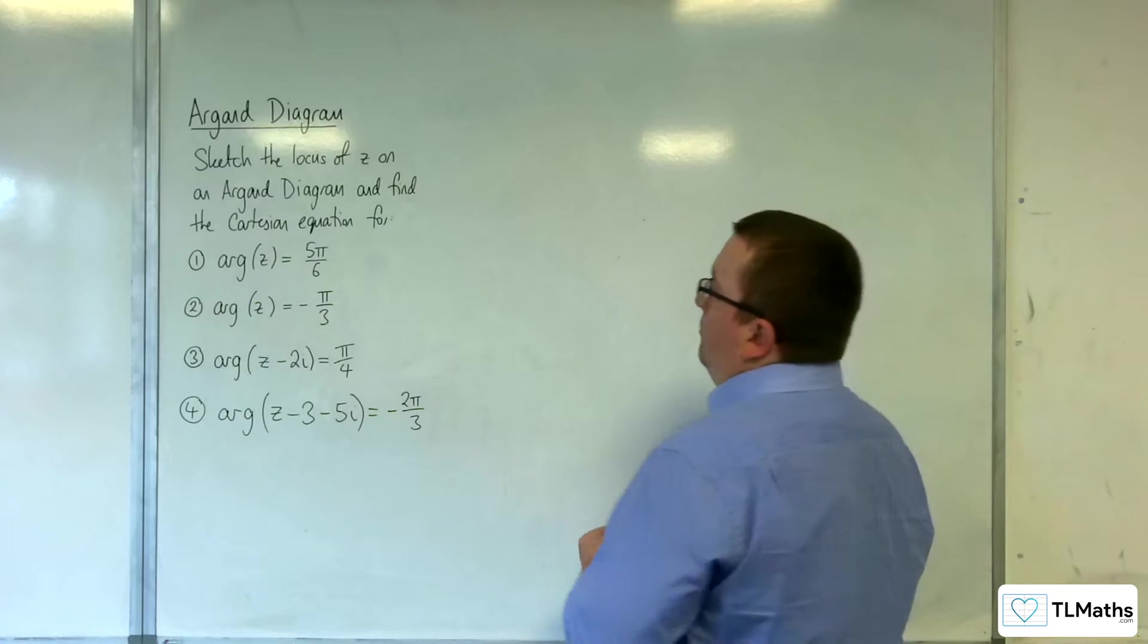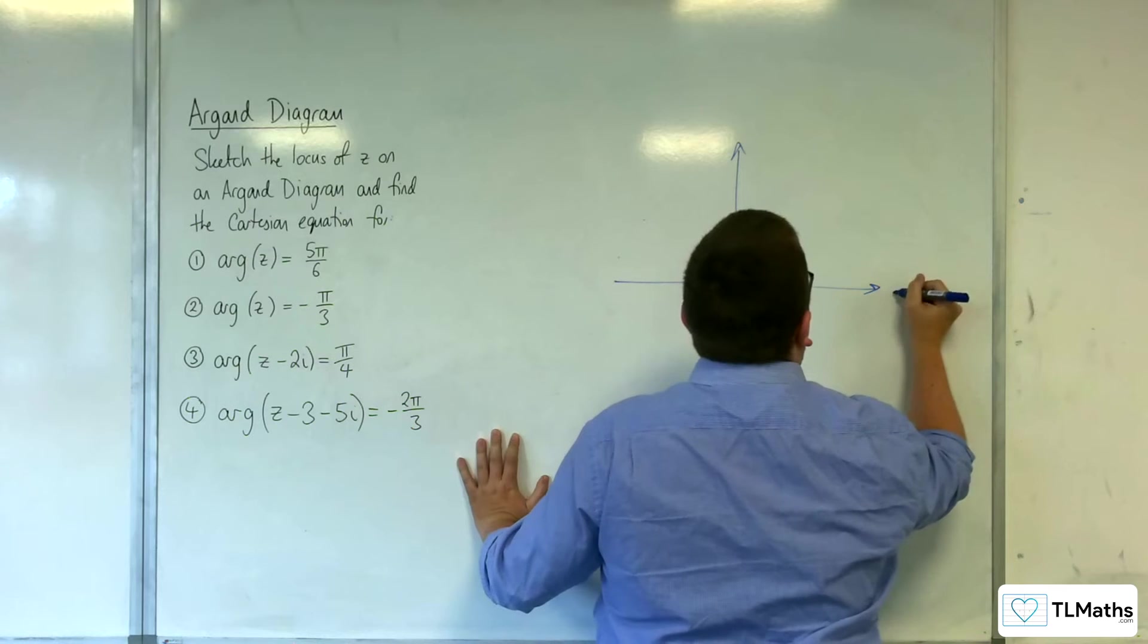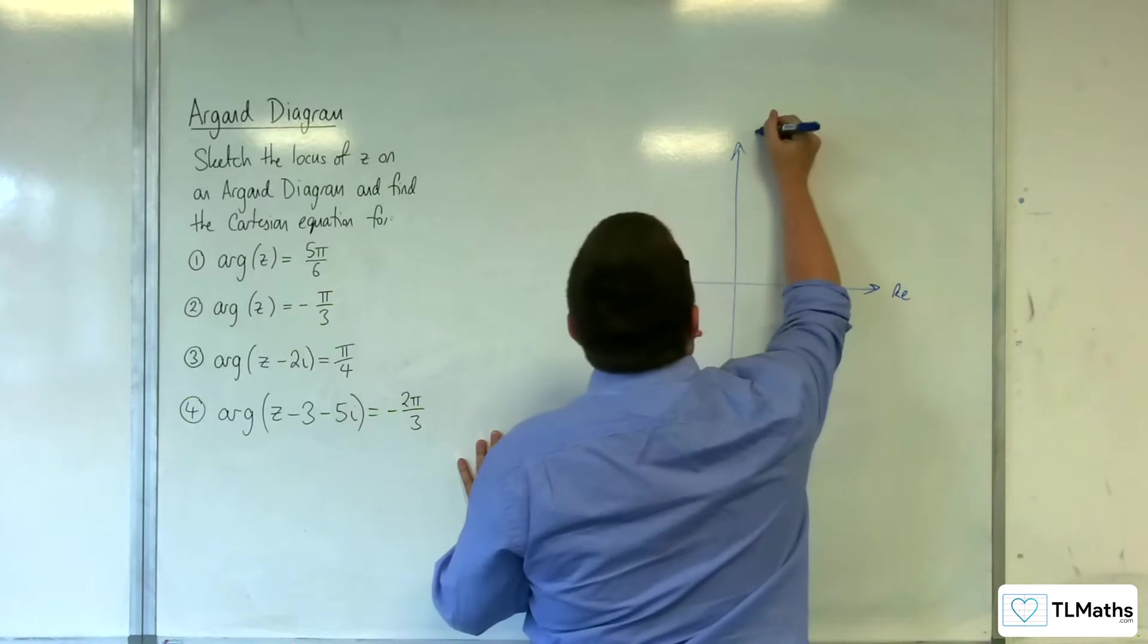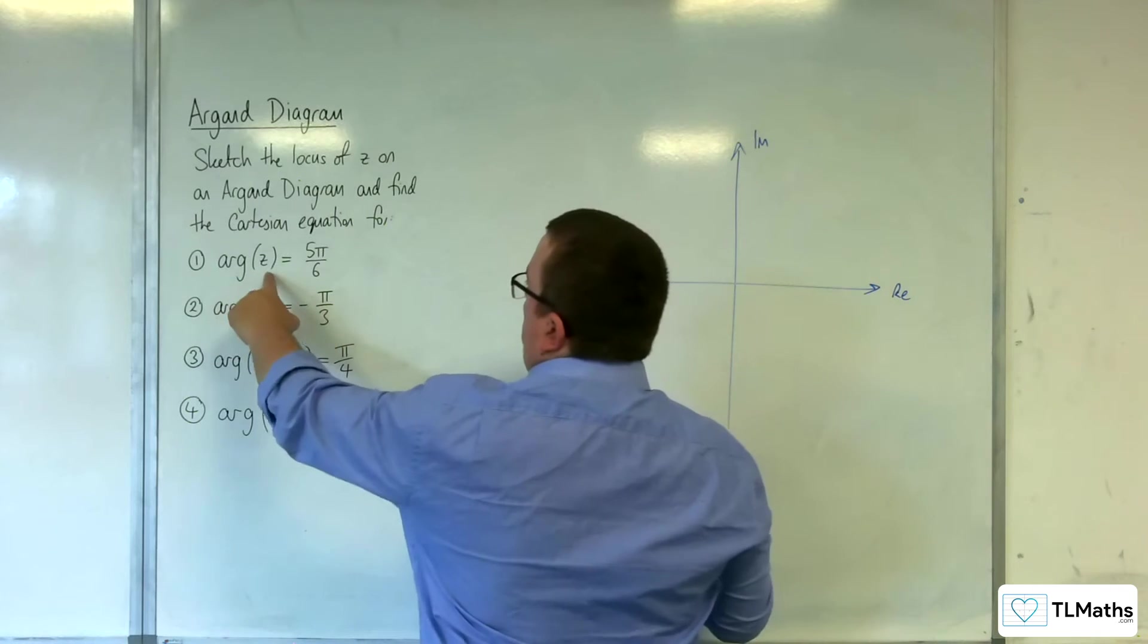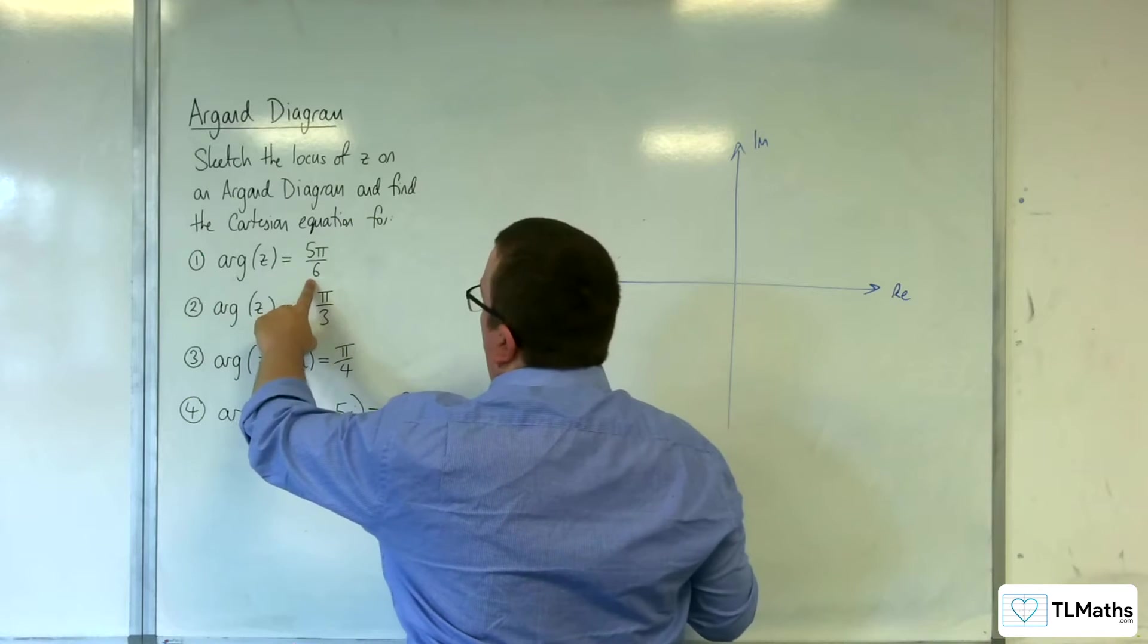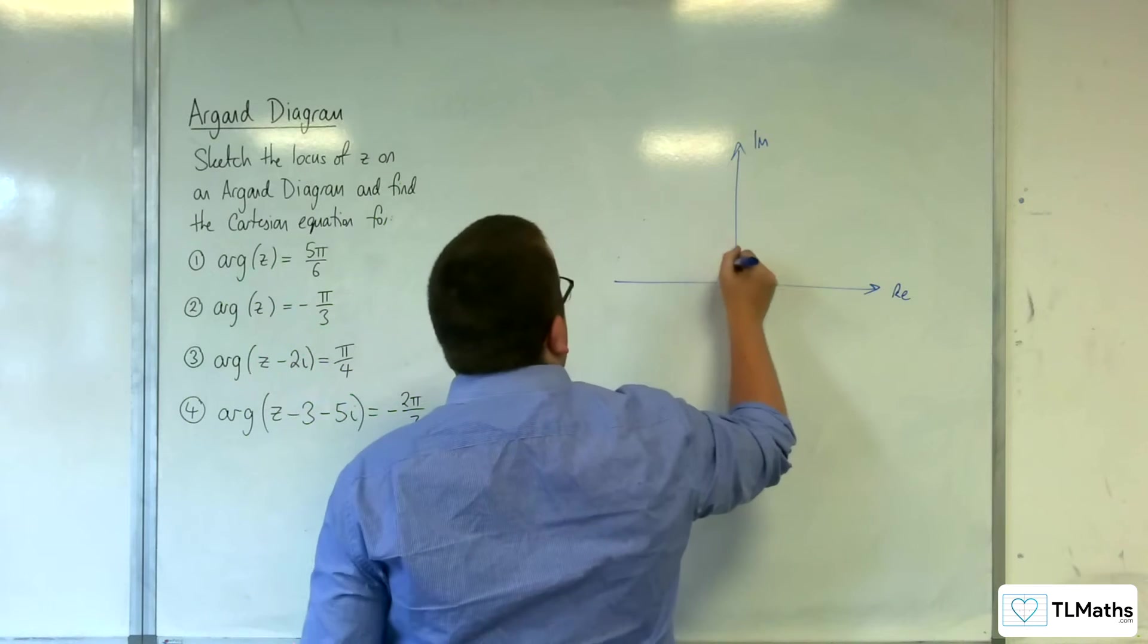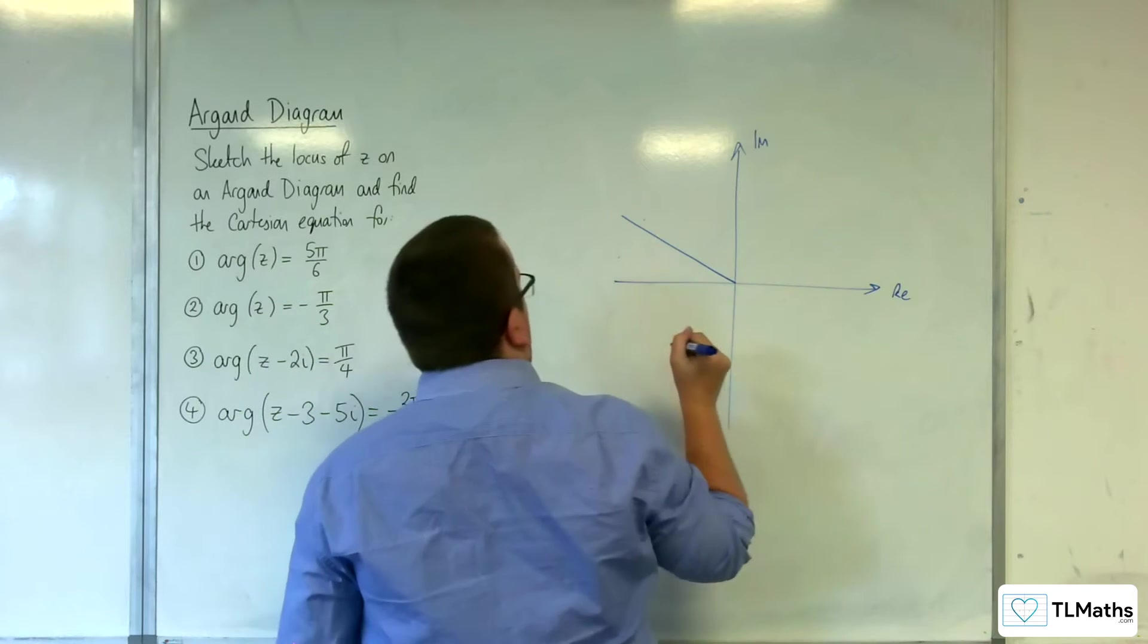The argument of z is equal to 5π over 6. Okay, so let's draw our Argand diagram. Real axis and imaginary axis. So, this is going to be starting at 0. An angle of 5π over 6. So, 5π over 6 is somewhere over here. Something like this.